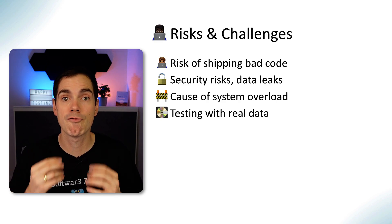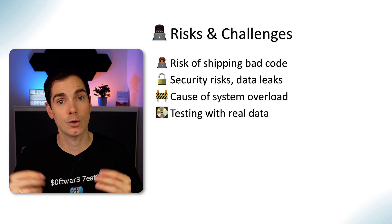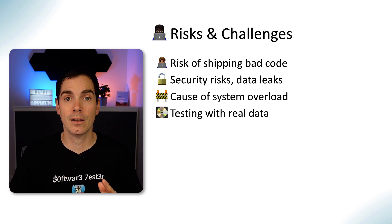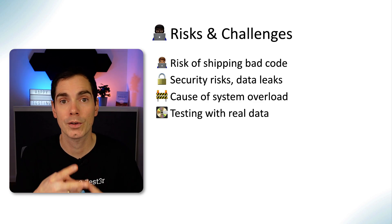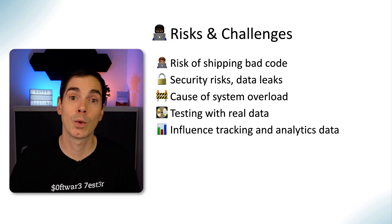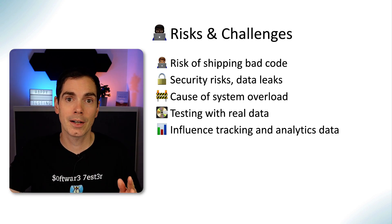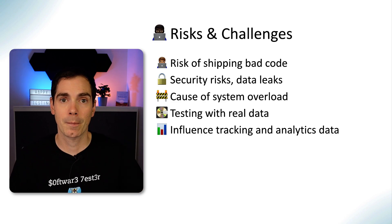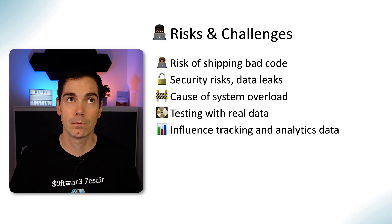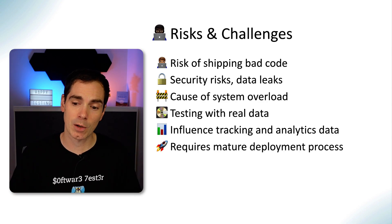Of course there's the challenge of testing with real data. Keep in mind that on a production system your test automation or chaos testing will change real data, which can influence your statistics and isn't easy to roll back. Testing in production will also influence your tracking and analytics data. If you do intensive testing on production, your analytics dashboard may show inflated visits and activity — and product management reporting those numbers to stakeholders won't be happy when they find out it was automated tests.